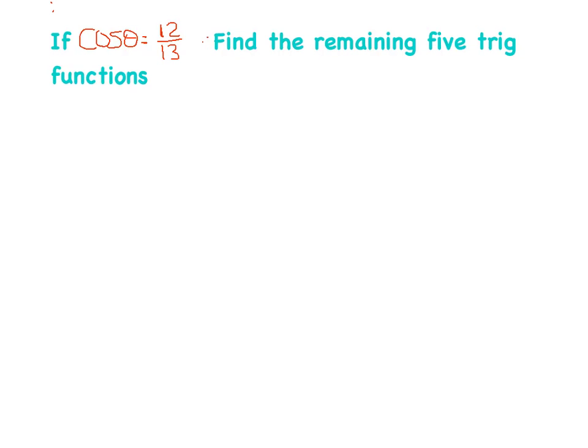Let's try another example. If cosine of theta equals 12/13, find the remaining five trig functions. Draw a right triangle with the right angle marked and theta in one corner. We'll label two sides based on what's given.